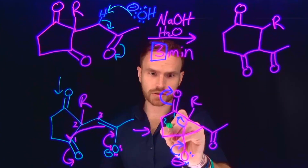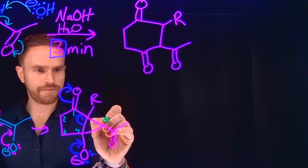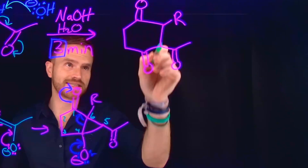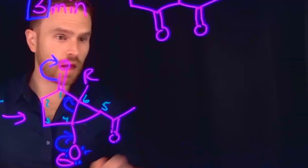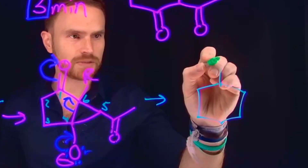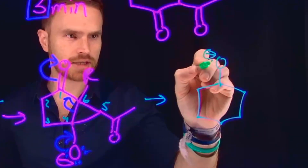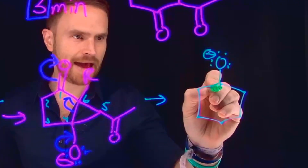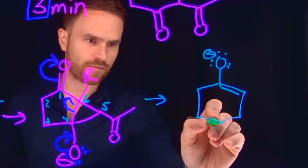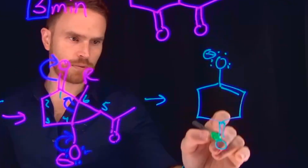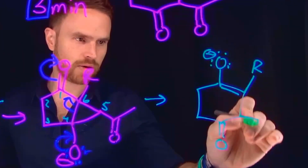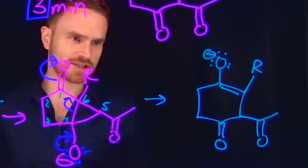Notice that this is going to have 1, 2, 3, 4, 5, 6 carbons — and that is how we form this 6-membered cyclohexane ring. The product of this transformation is going to be that 6-membered ring, where now at this position we have a negatively charged oxygen. There's an alkene located here because these electrons came to form an alkene. We have reformed our carbonyl group, our ketone at this position. We still have our R group here, and then we still have this other ketone species at this position.